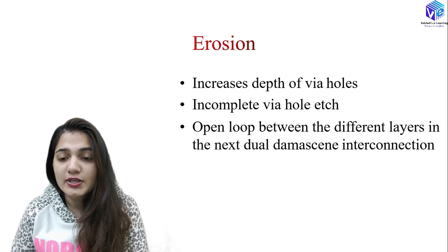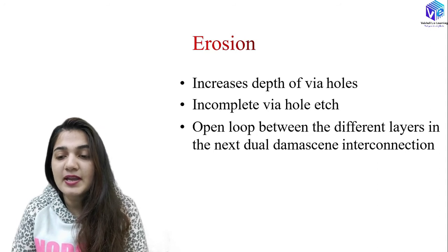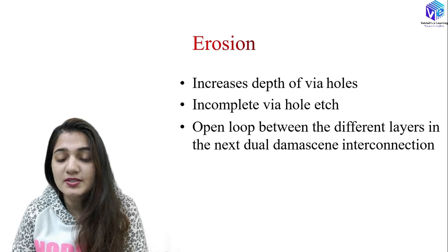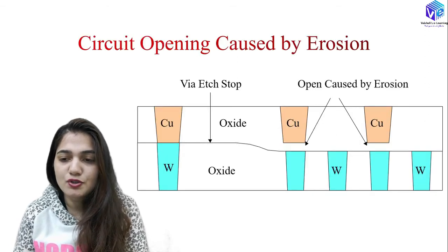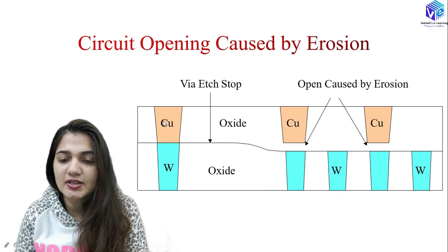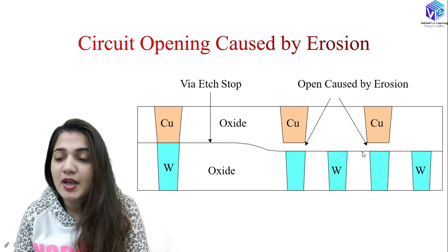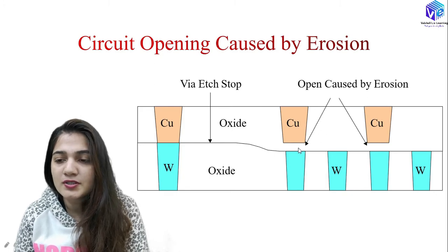Now, what is erosion? Erosion increases the depth of wire holes. During erosion we have incomplete wire hole etching, with open loops between different layers and the next-layer dual damascene interconnection. At the lower layer, erosion is caused by the density difference between layers. Where we have higher density there is more removal, causing the copper layer not to reach the tungsten, resulting in open circuits due to erosion.